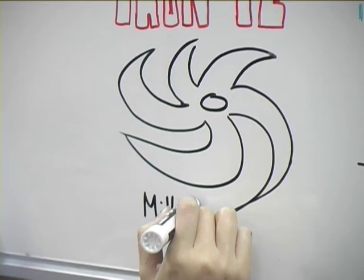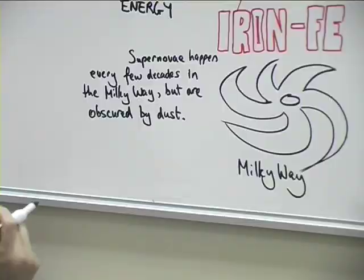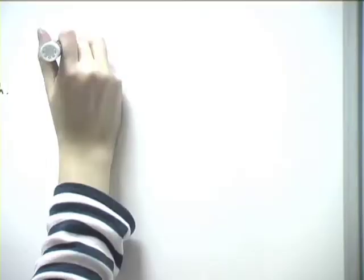The remaining core left over from the supernova can either form a neutron star or, if it's massive enough, can form a black hole.